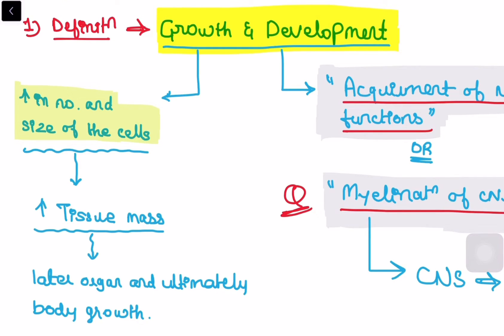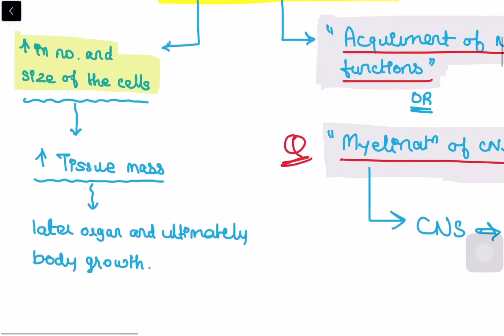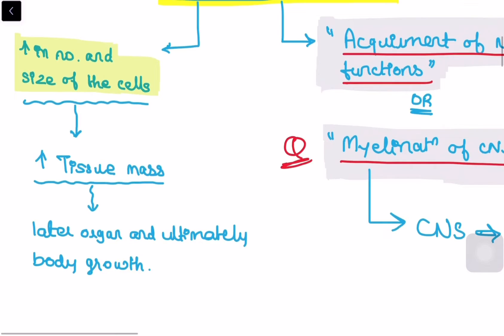Growth that means the increase in number and size of the cells. If the number and size of the cells increase that means the tissue mass will also increase and this tissue mass will later on increase the size of the organ and ultimately the body growth.